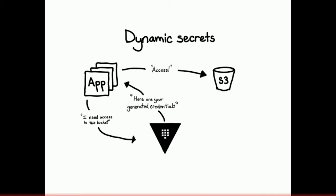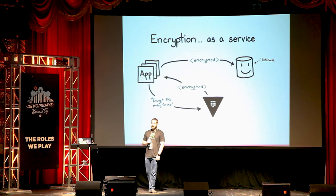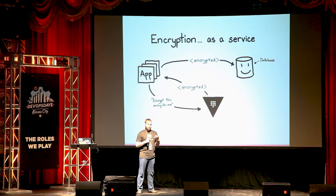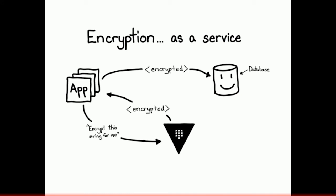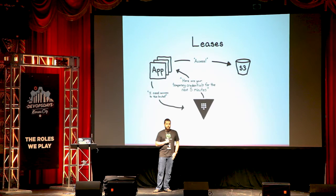Vault is also going to give you dynamic secrets. So you have an application that needs to access some resource — instead of giving it a static username and password, you can generate credentials automatically for that. Vault will give you encryption as a service, so instead of having your developers come up with their own programmatic ways to handle encryption in their application, they can just use Vault and it will handle the encryption for them. It's also going to give you leases on your secrets — you can say you want this secret to only be useful for the next five minutes, one minute, or 30 seconds.